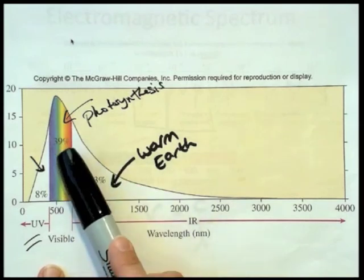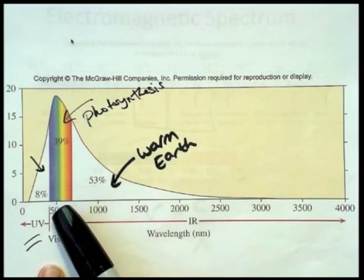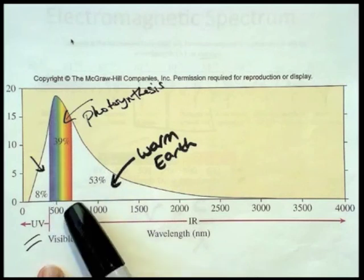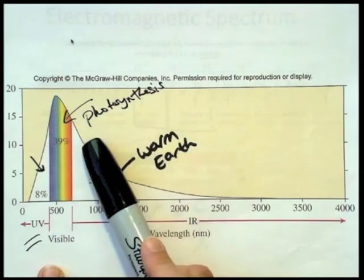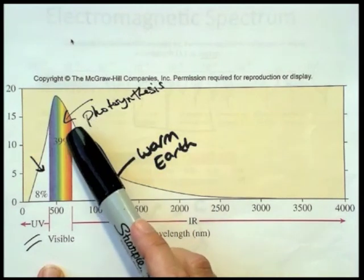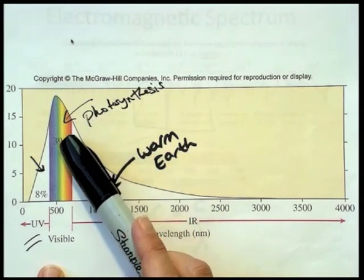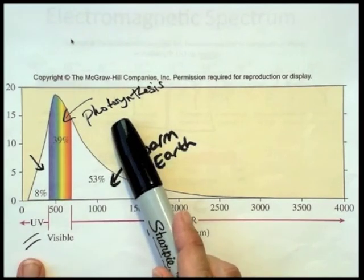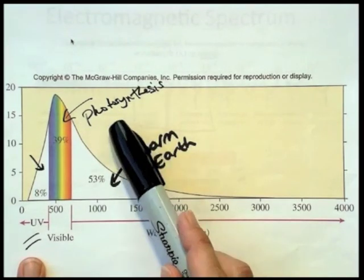39% of all the radiation that's getting to us from the sun is in the form of visible light, and that's another good thing. Obviously, we need light to see, but most importantly, the energy from the visible region is what drives photosynthesis.